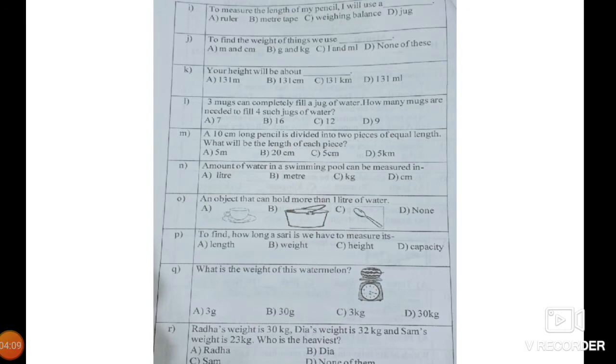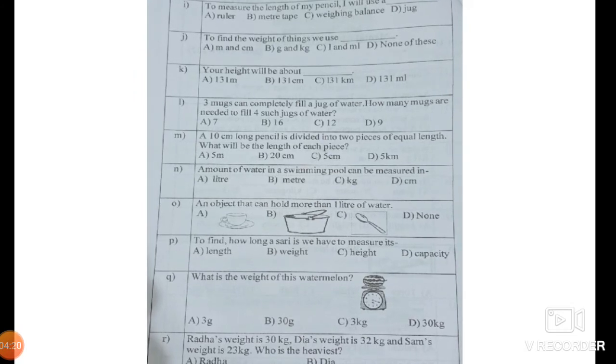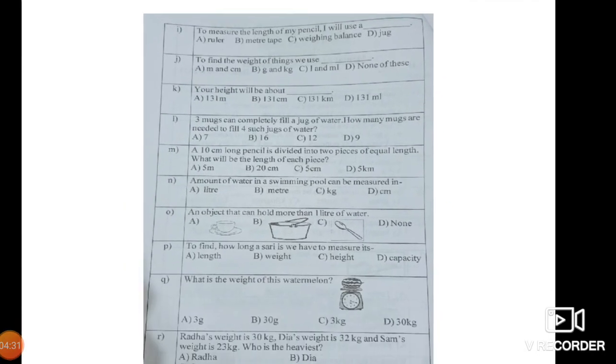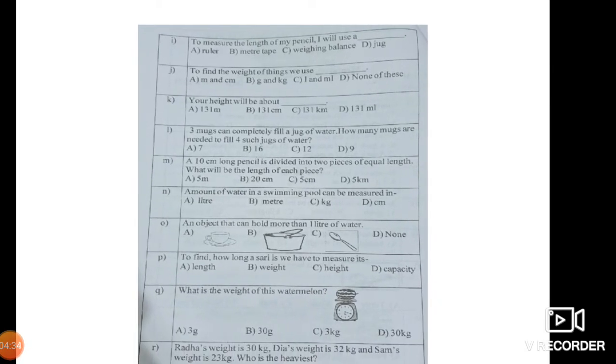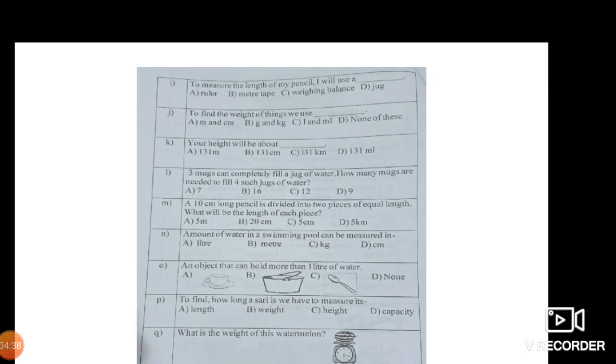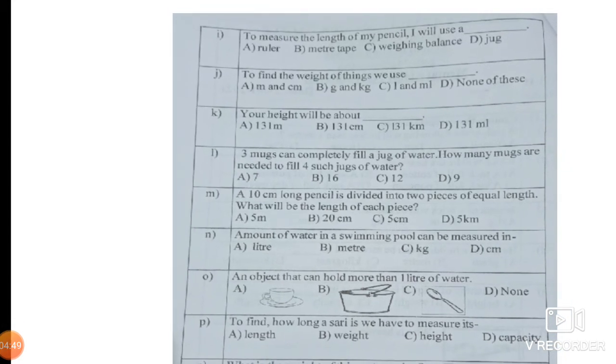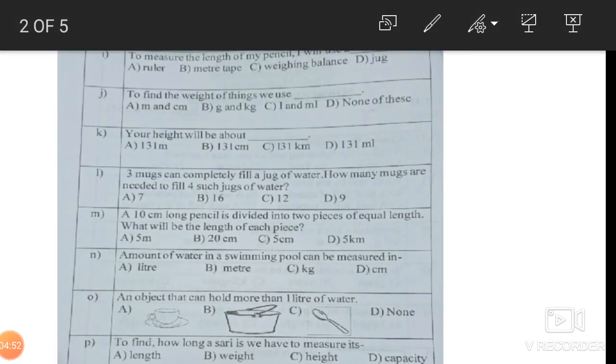I'll read from the worksheet which I'm having. Please turn your worksheet, come to question I. Here it says, to measure the length of the pencil. If you have to measure the pencil, what will you use? A: Ruler, B: Meter tape, C: Weighing balance. What will you use to measure the pencil? To measure the pencil, what will you use? Of course, yes, ruler. Meter tape is the tape that the tailor has. We can't use weighing balance. Yes, it's going to be ruler.